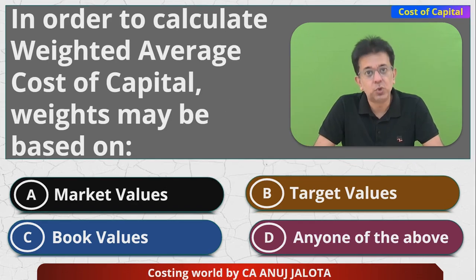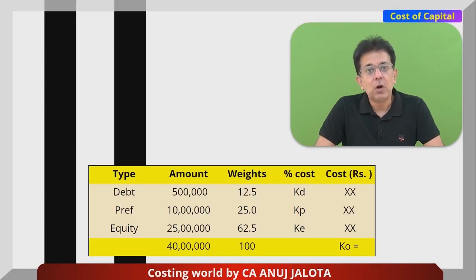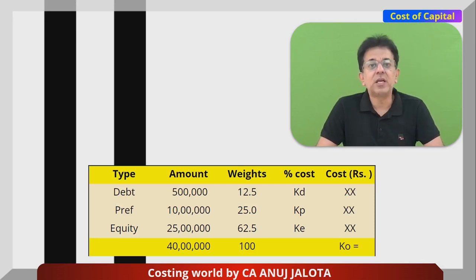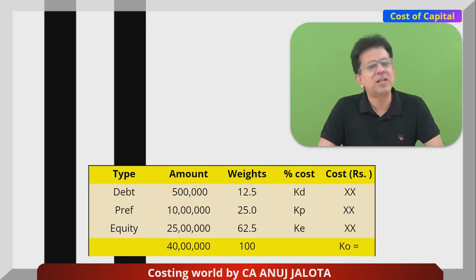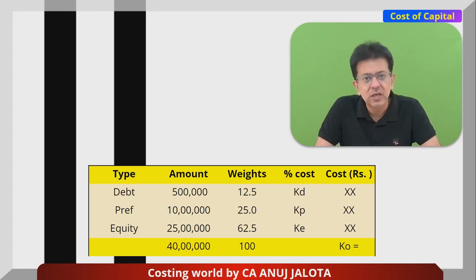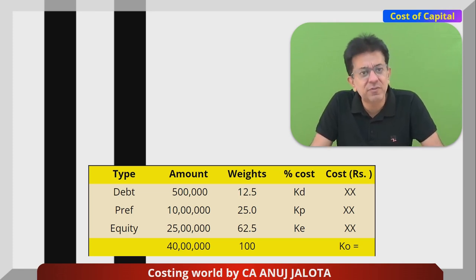Out of the four answers, which is the correct one? Whenever you have to find out ko — ko means overall cost of capital, weighted average cost of capital, composite cost of capital, denoted as ko or kc — in the first column you try to have all the sources of capital, say debt, preference, and equity.